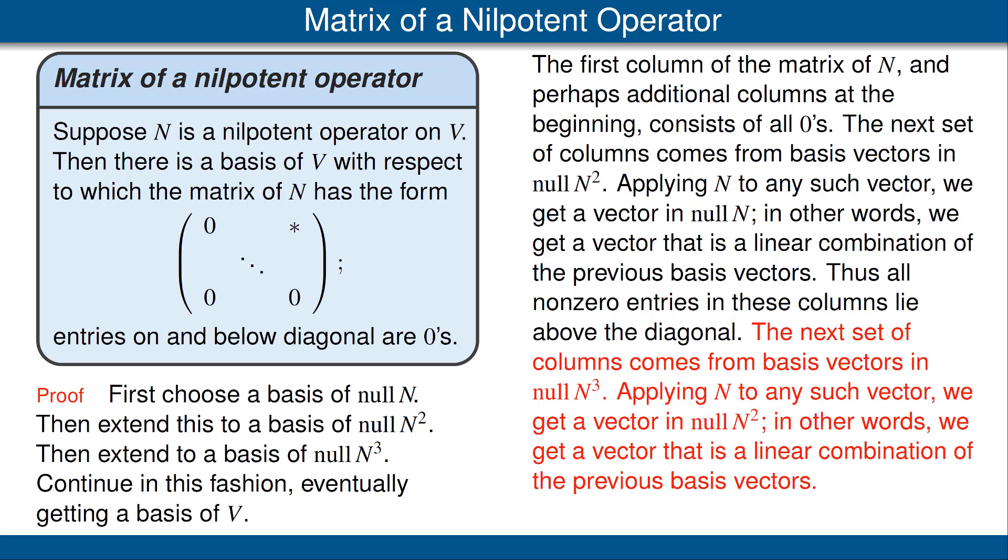Now we move on to the basis vectors in the null space of N cubed. When we apply N to any such vector we get a vector in the null space of N squared. Thus we get a vector that's a linear combination of the previous vectors. This means that the only nonzero entries in the matrix corresponding to those columns lie above the diagonal.